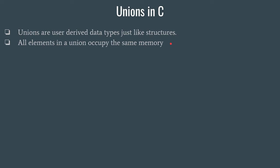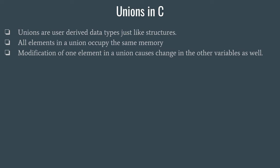All elements in a union occupy the same memory location. That means if there are four variables — say int, float, char, and double — all these four variables share the same memory location, and if there is some change in any of the member variables, that will cause a change in the other variables as well.